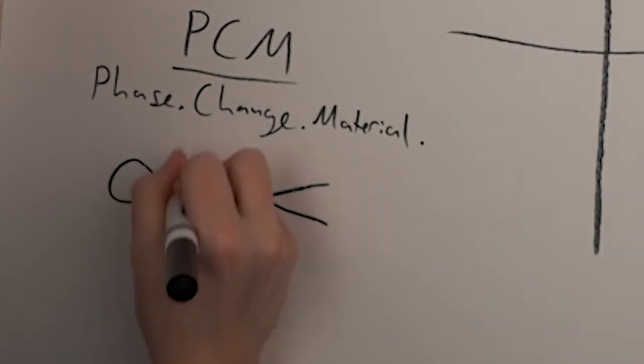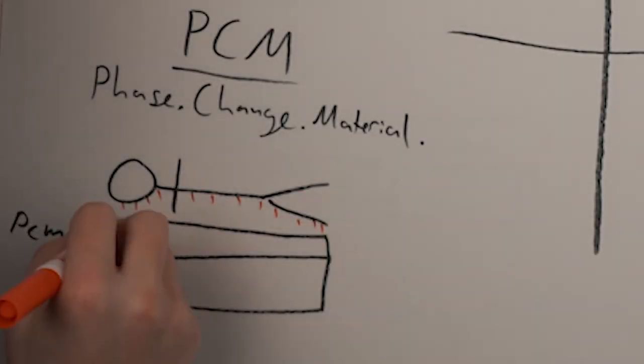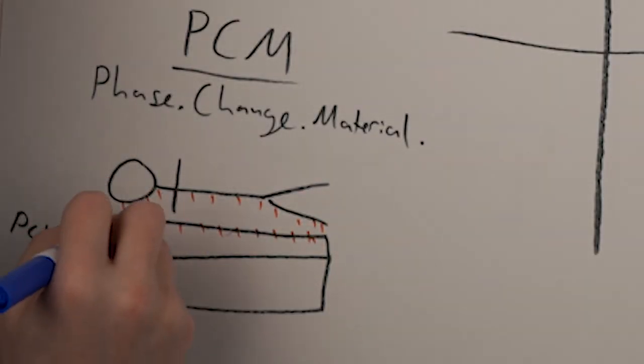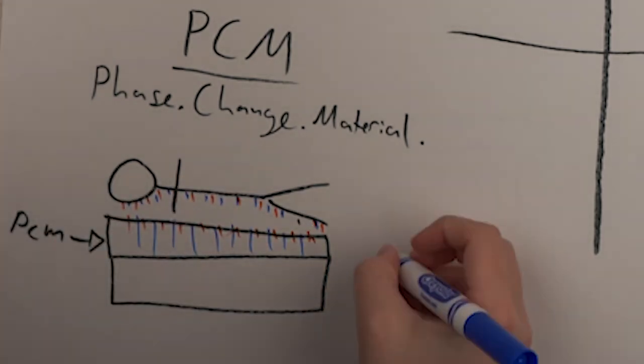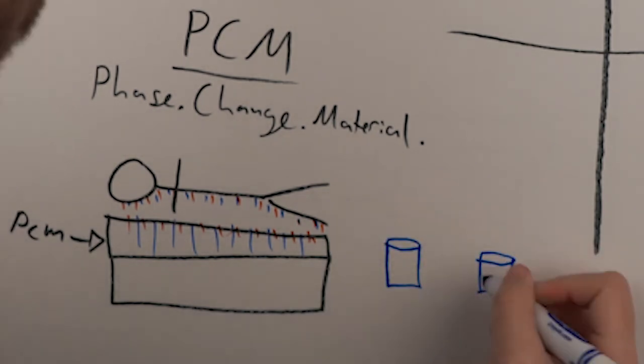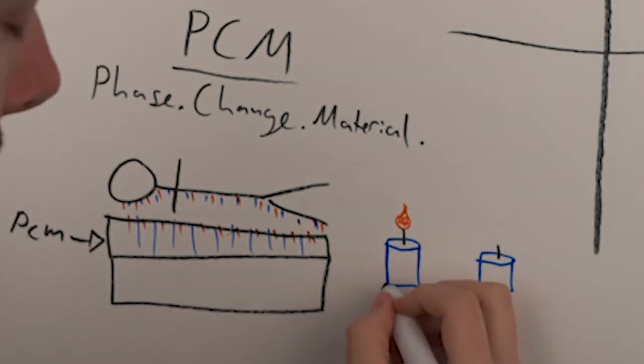When they incorporate this material into mattresses, it's little microscopic beads of polyolefin wax that are surrounded in a plastic shell. Your body temperature turns the hard wax into a warm liquid, and your body heat absorbs into it. Then when your body temperature gets cooler, the wax can release the energy and give you that heat back. So it's like heating and cooling for your mattress.